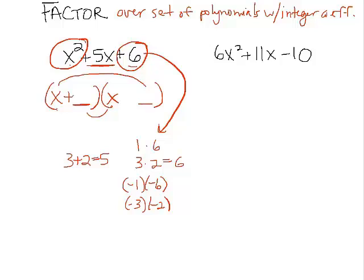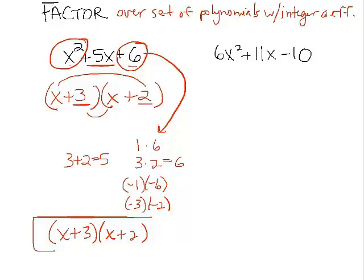So if I put a plus 3 right here and a plus 2 right here, you'll notice that if I were to multiply them, I would get 3x and 2x, which get us our 5x. So our factored form would be x plus 3 and x plus 2.